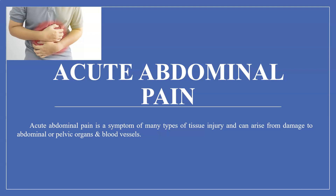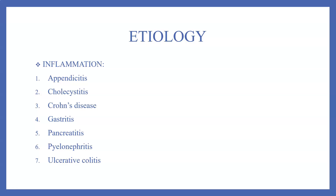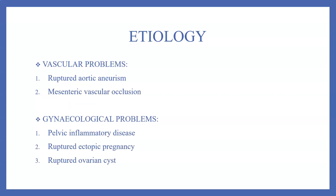Acute abdominal pain is a symptom of many types of tissue injury and can arise from damage to abdominal or pelvic organs and blood vessels. The common etiological factors include inflammatory conditions such as appendicitis, cholecystitis, Crohn's disease, gastritis, pancreatitis, pyelonephritis, and ulcerative colitis.